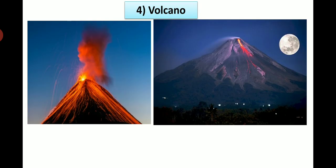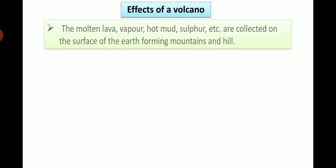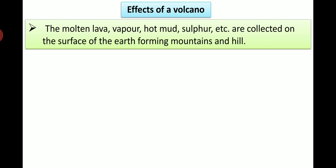Now we can see pictures of volcano or volcanic eruption. A volcanic eruption is a natural event or phenomenon in which the solid, liquid and gaseous substances below the earth's crust which are very hot are pushed towards the crust. The molten lava, vapor, hot mud, sulfur etc. are expelled on the surface of the earth forming mountains and hills.